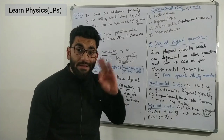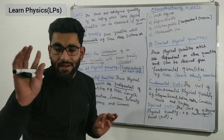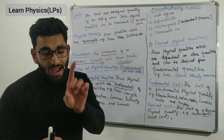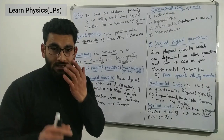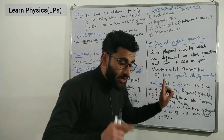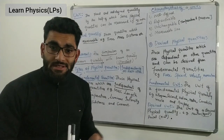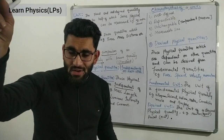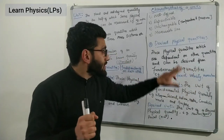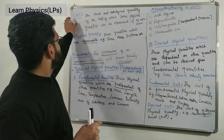Coming to derived quantities — those physical quantities which are dependent on other physical quantities. For example, force equals mass times acceleration, so force depends on mass and acceleration. Similarly, momentum is the product of mass and velocity, so momentum depends on both. Velocity is displacement divided by time, so it depends on displacement and time. All quantities dependent on other quantities are called derived physical quantities.